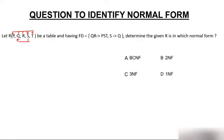Now determine those attributes which are not determined by any of the given functional dependencies. R is an attribute not determined by any attribute — P has an arrow, Q has an arrow, S has an arrow, T has an arrow, but R is not determined by any attribute. So definitely R will be the integral part of my candidate key.